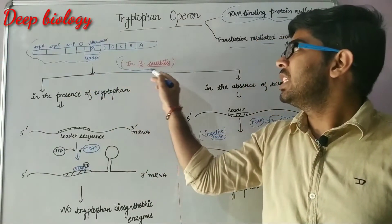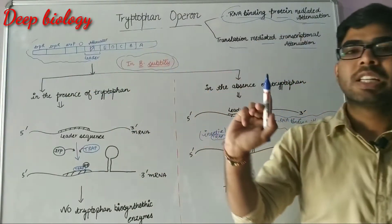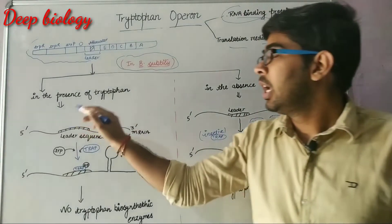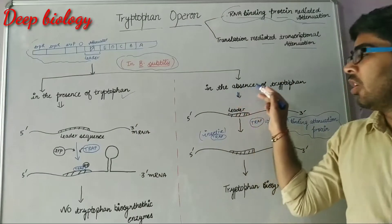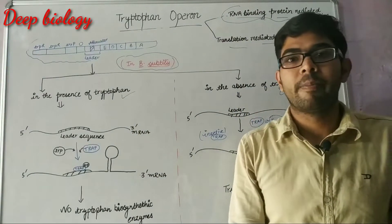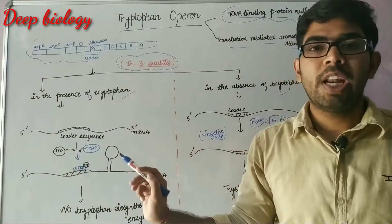There are two cases in Bacillus subtilis in the RNA binding protein mediated attenuation: in the presence of tryptophan, and in the absence of tryptophan. In the presence of tryptophan,